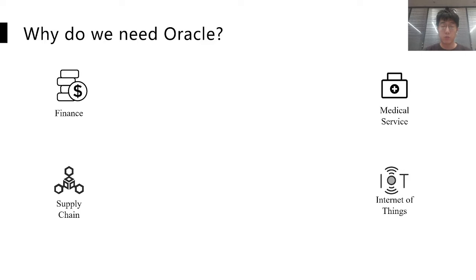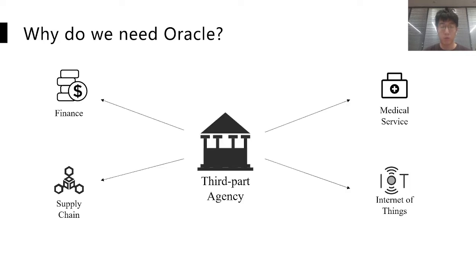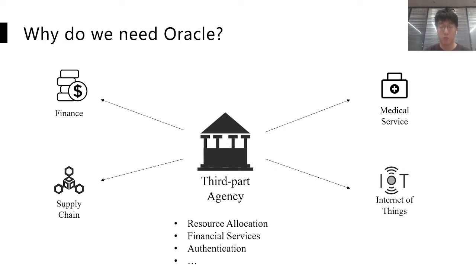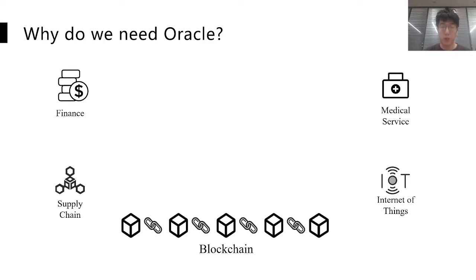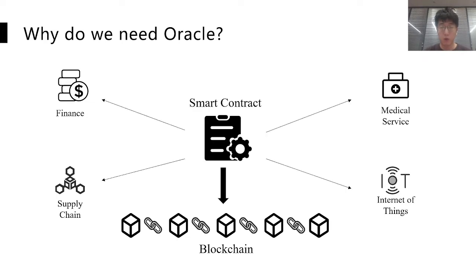The first question that needs to be answered is: why do we need Oracle in our blockchain system? In the previous time, if we want to provide services in different areas, a third party agency is always needed, which is usually considered as fully trusted and is responsible for many important tasks like resource allocation. Even though such a scheme is pretty efficient, it may encounter problems caused by a single point failure. In order to deal with such a problem, blockchains are gradually adopted due to the nature of decentralization, and among all blockchain-based applications, smart contracts play a very important part.